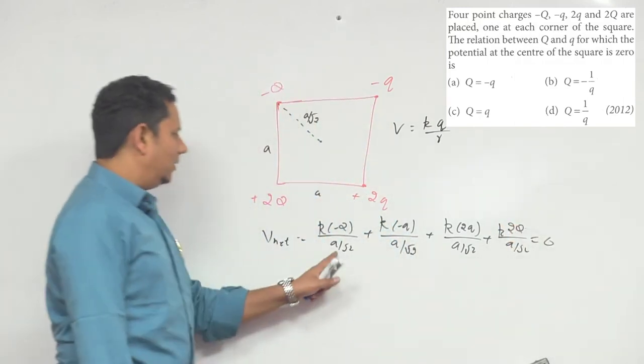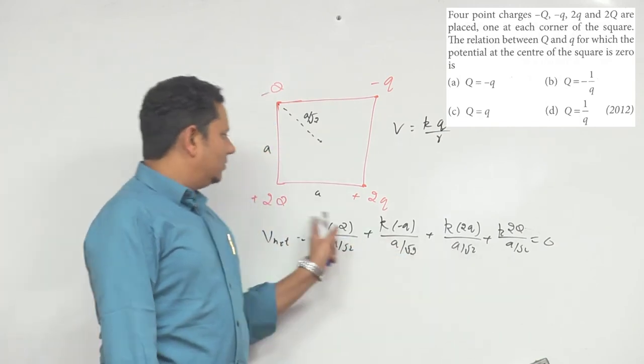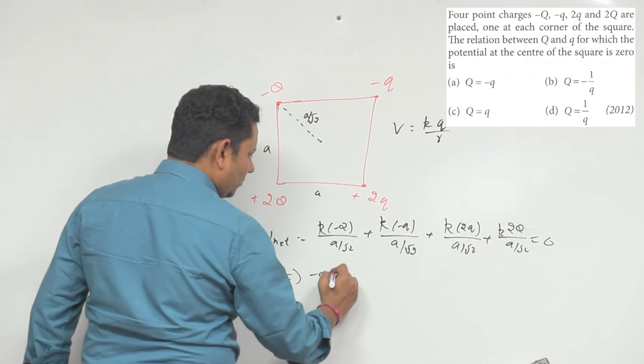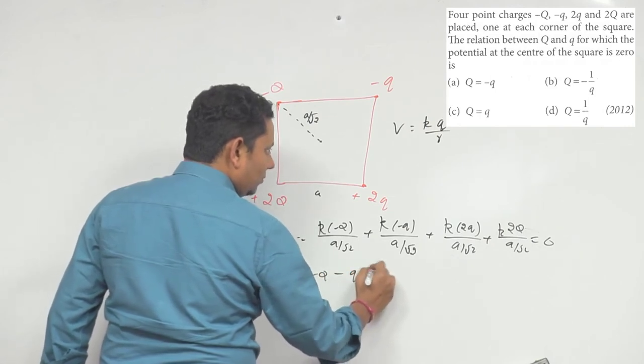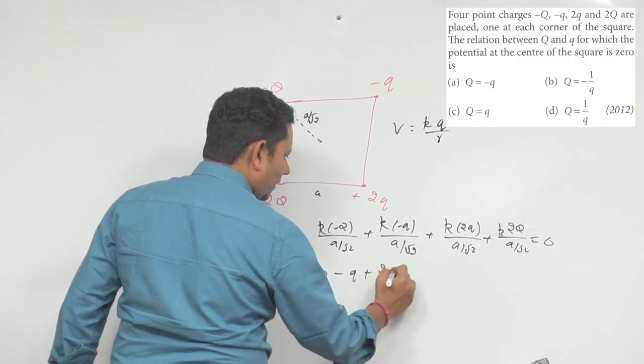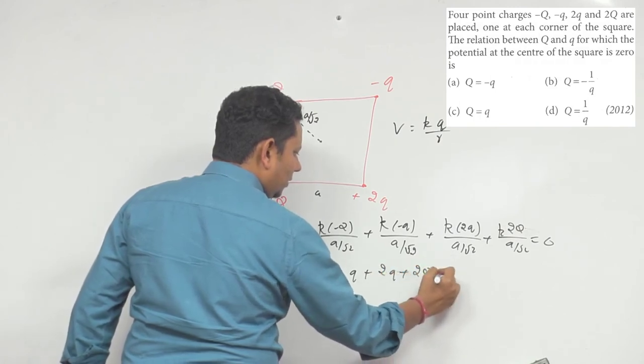This equals zero. A by root 2 cancels. This means minus capital Q minus small q plus 2 small q plus 2 capital Q equals zero.